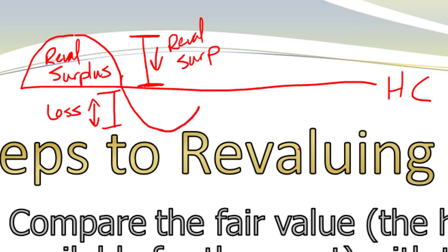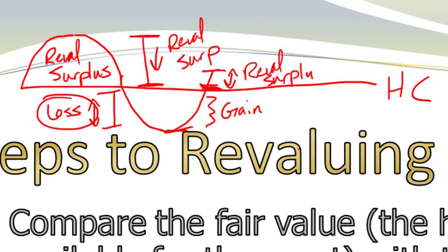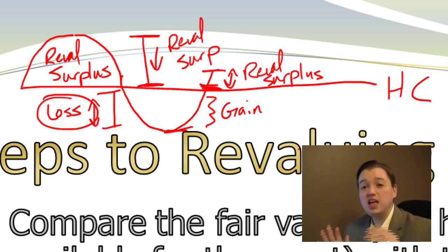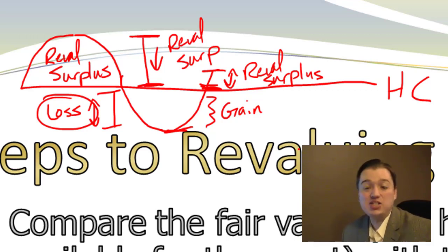If the value jumps again, I can show a gain, but only to the extent that it offsets the earlier loss. So if I've shown a $100,000 loss, I can show up to a $100,000 gain. Once I get back up to that original value and I've shown a $100,000 gain which matches that loss, then the rest goes back into revaluation surplus. So: anything that goes up is a revaluation surplus unless it offsets a previous loss. Anything that goes down comes out of revaluation surplus until that's exhausted, and then the rest goes into a loss.